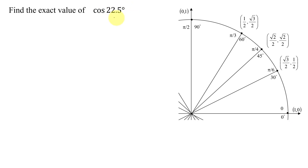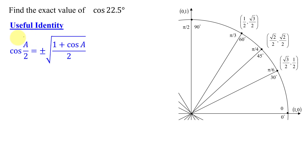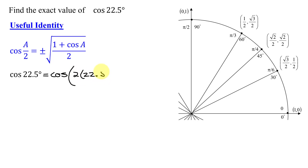The .5 of a degree here is a big hint on how to do this problem. It indicates I'm going to have to take an angle and divide it by 2. So to find the cosine of 22.5 degrees, I'm going to have to use the cosine of a over 2. Because the cosine of 22.5 degrees can be written as the cosine of 2 times 22.5 degrees, all divided by 2.